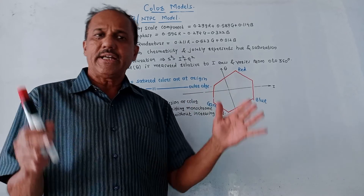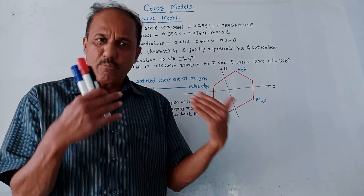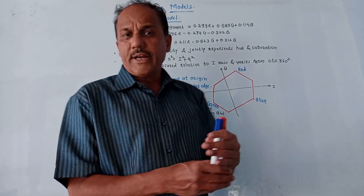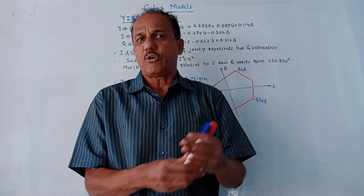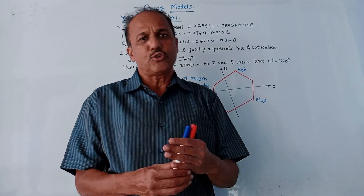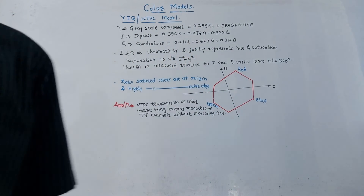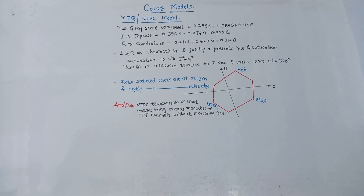In the YIQ color space diagram, zero-saturated colors are at the origin while highly saturated colors are on the outer edge. The application of this color model is for NTSC transmission of color images using existing monochrome TV channels without requiring any extra bandwidth. That is about the YIQ or NTSC color model, and that's it for today's session — thank you for watching.